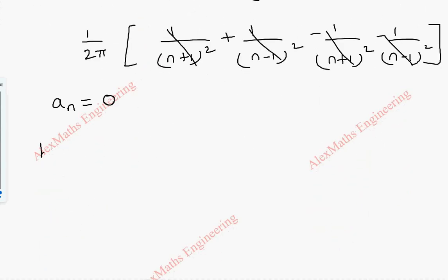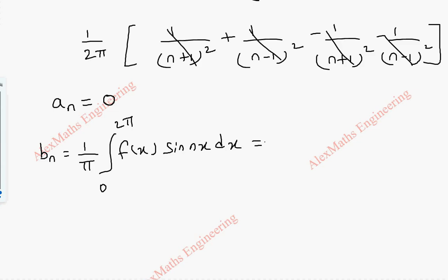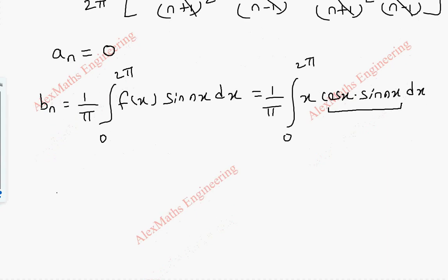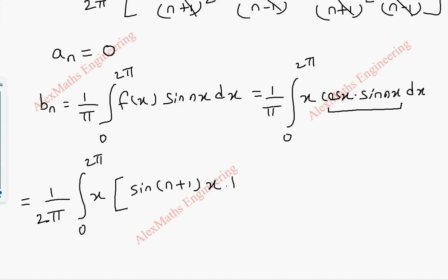Coming to bn, the formula is (1/π)·integral from 0 to 2π of f(x)·sin(nx) dx. This becomes (1/π)·integral from 0 to 2π of x·cos(x)·sin(nx) dx. Applying the product-to-sum formula, we keep x as it is and use ½[sin((n+1)x) + sin((n−1)x)].